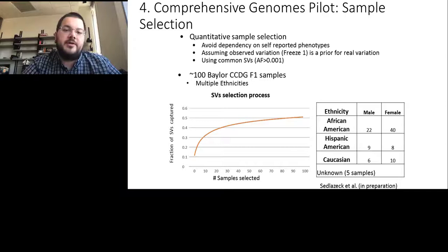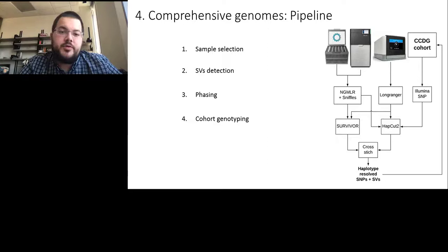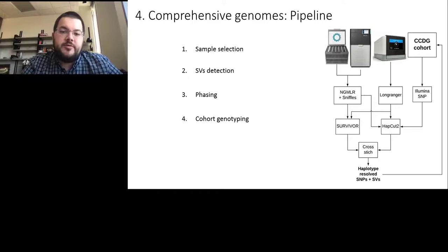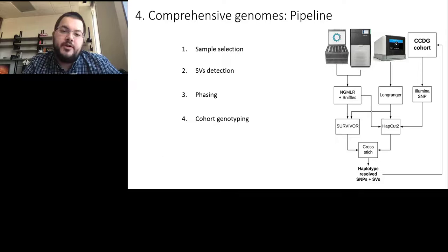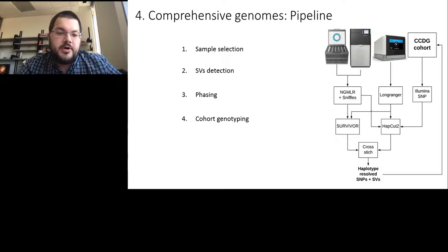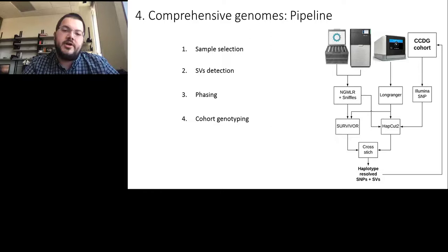We are hunting for comprehensive genomes using the following pipeline: using NGMLR and Sniffles to detect structural variants over Oxford Nanopore or PacBio reads, then using 10x Genomics with the Long Ranger pipeline to phase structural variants together with SNPs already called in the CCDG cohort. This phasing is done over the HEPCAT2 pipeline, and the merged structural variants from long reads with linked reads, combined with phased SNP information, are input into CrossStitch — a program implemented by the Schatz lab at Johns Hopkins University. This yields a haplotype-resolved SNP and structural variant list, and can re-encode the whole genome as a diploid FASTA file. We are also working on computationally genotyping SNPs and structural variants back into the larger CCDG cohort.